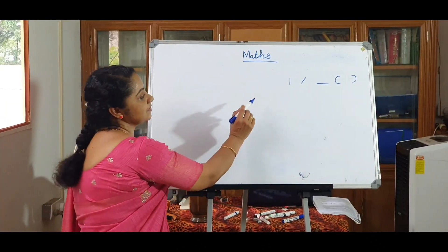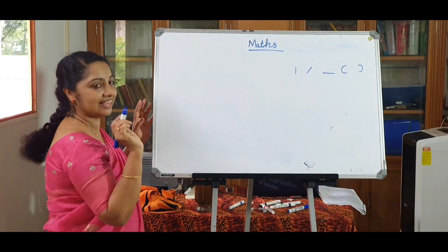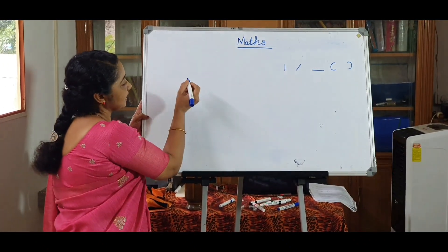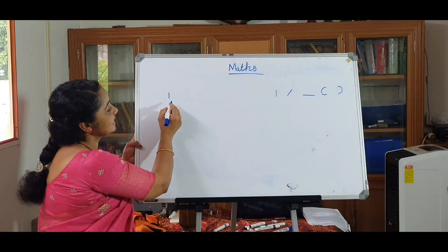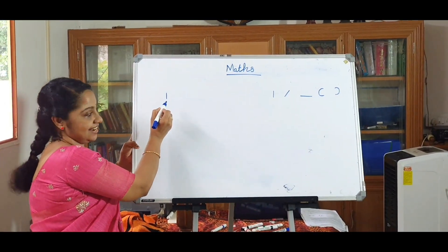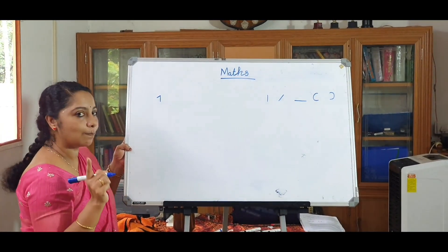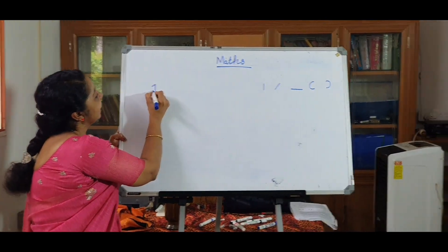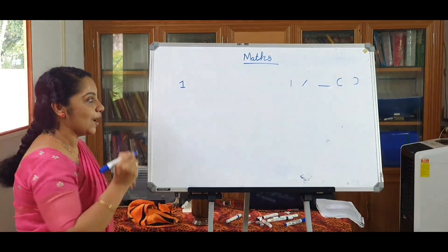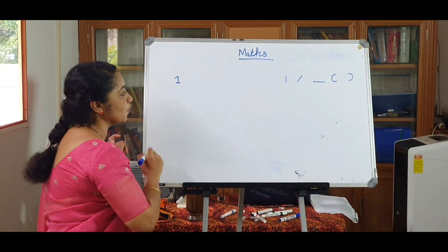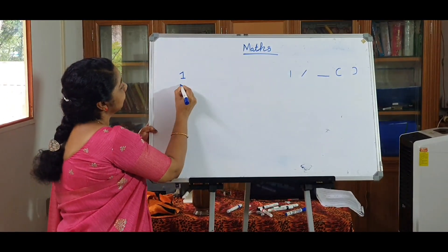First we will write one using these lines and curves. For writing one, we will write this. What is this? This is a standing line, and here this is an oblique line and a sleeping line. Yes, one is here.